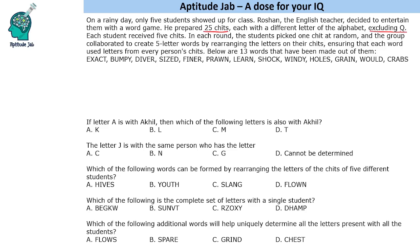So excluding Q, all letters were used and each student received 5 chits. In each round, the students picked 1 chit at random and the group collaborated to form 5-letter words by rearranging the letters on their chits, ensuring that each word used letters from every person's chits. So one had to use letters from every person's chits to form 5-letter words. This basically means that all 5 letters are present in 5 different chits.